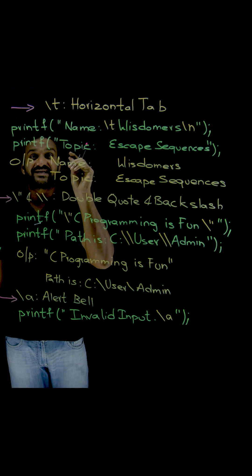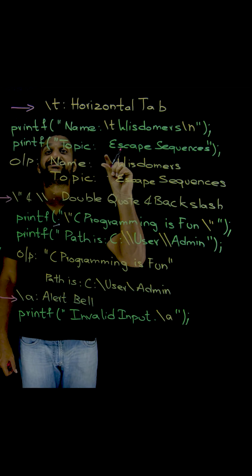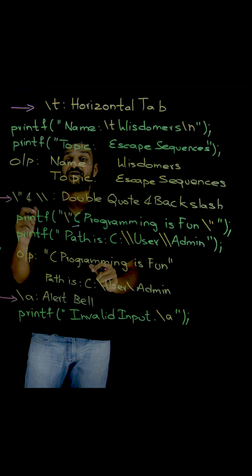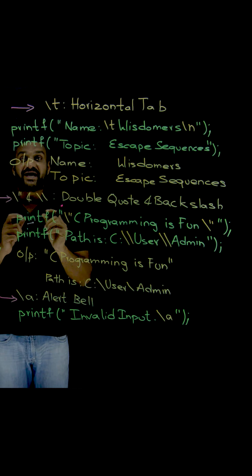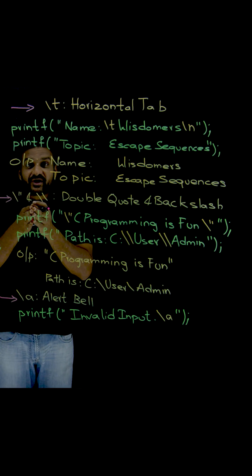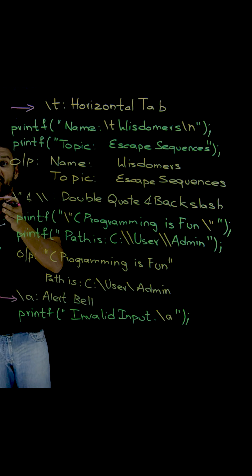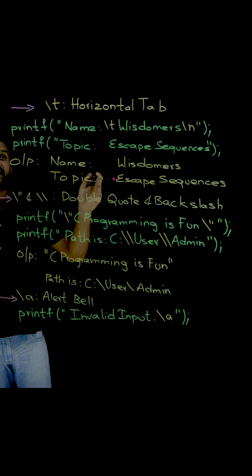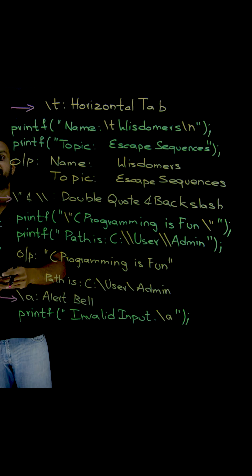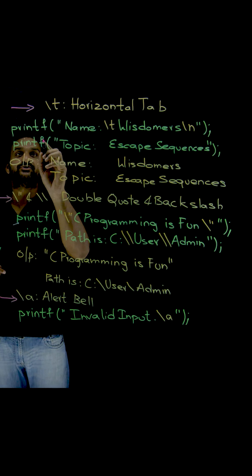This is slash t, and the slash t is used for horizontal tab. Whenever we want to create a horizontal space, a horizontal tab space within the text of the format string, then we are going to use this slash t. Let's try to understand this by using these examples.